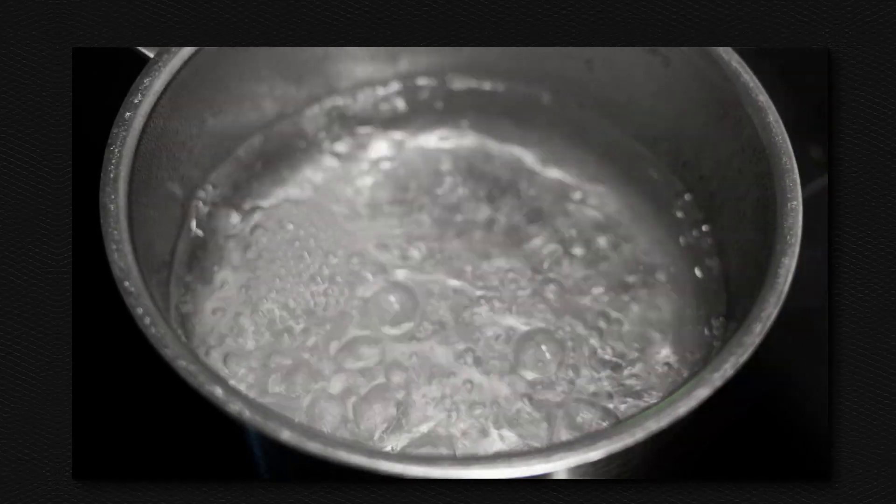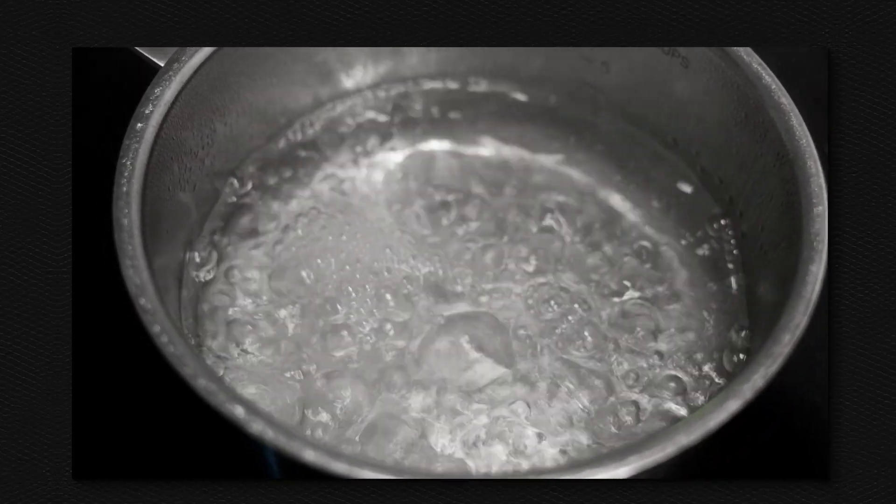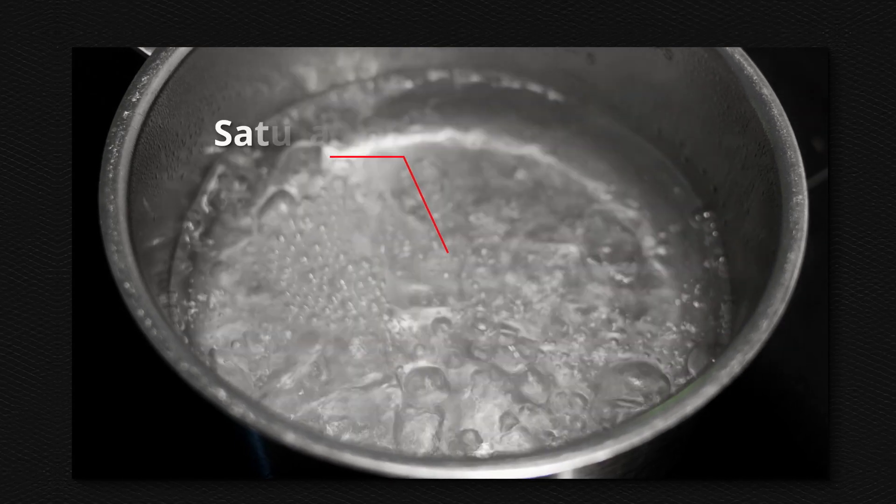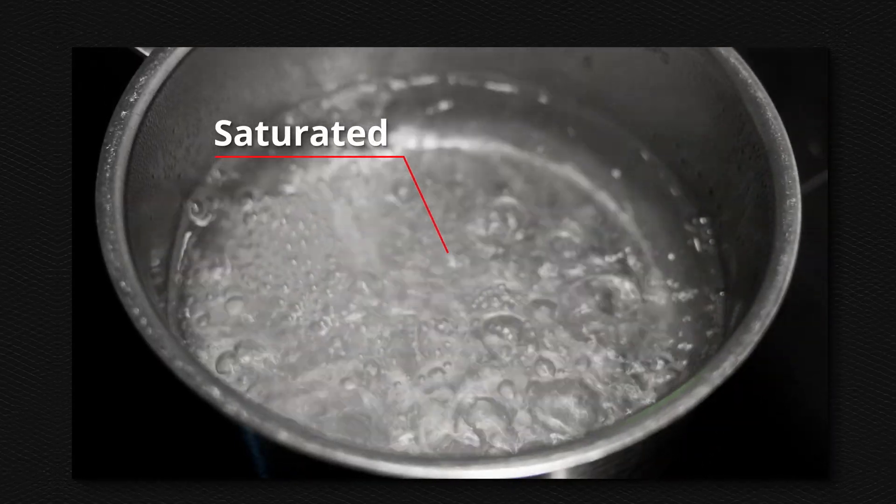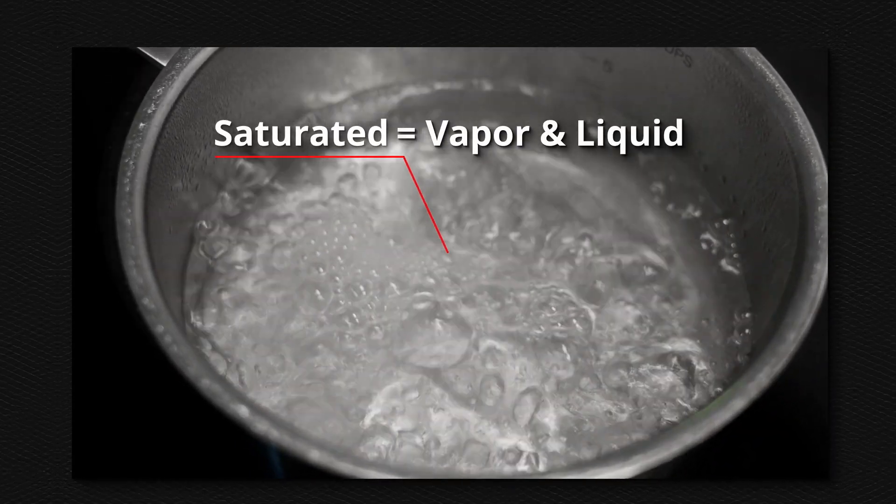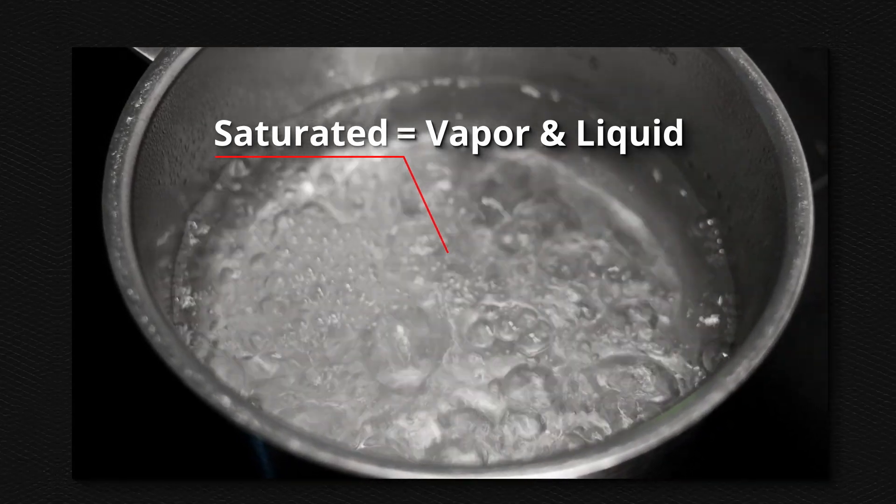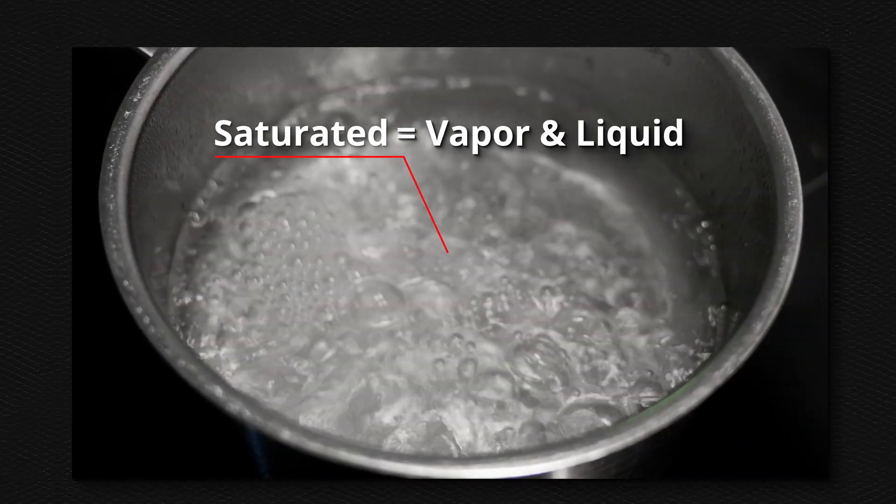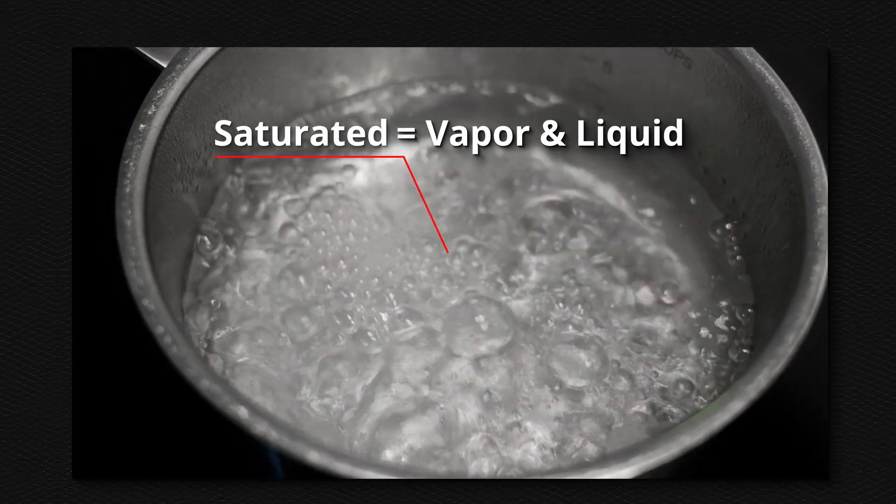Boiling water can help understand the concept of saturated refrigerant remaining at constant temperature. When refrigerant is saturated, in other words, liquid and vapor exist, the temperature will be constant when heat is added or removed. The boiling water is saturated since water and vapor exist at the same time.